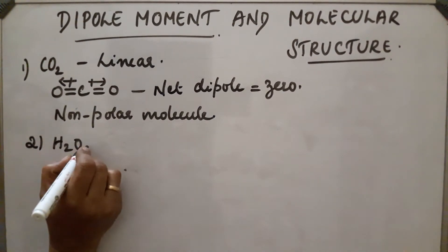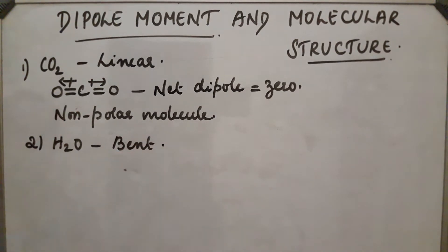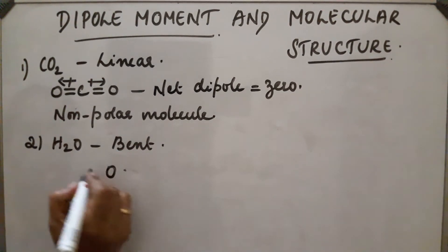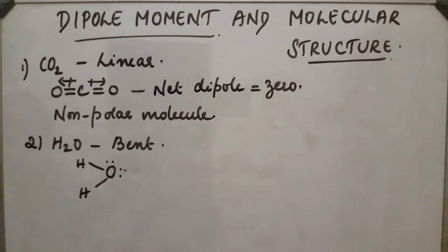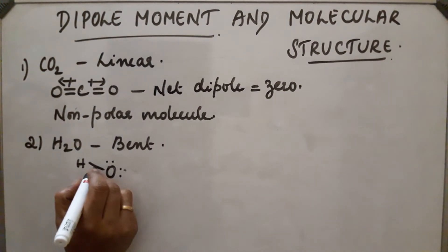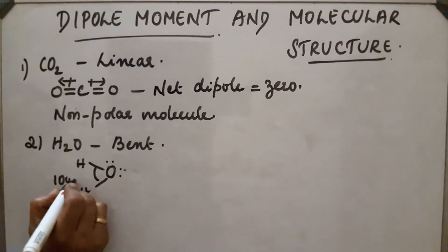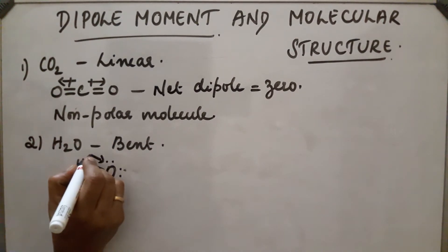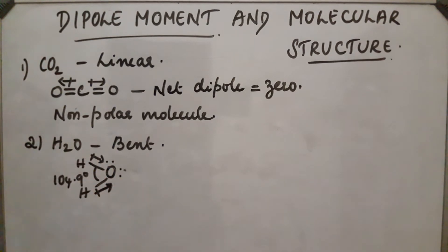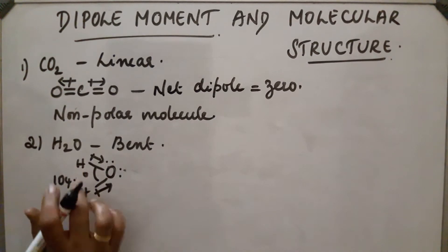Next example: the H₂O molecule. H₂O molecule is bent in shape, and the HOH bond angle is 104.5 degrees. The electron pair shifts towards the more electronegative atom, and the two bonds are oriented at an angle of 104.5 degrees.